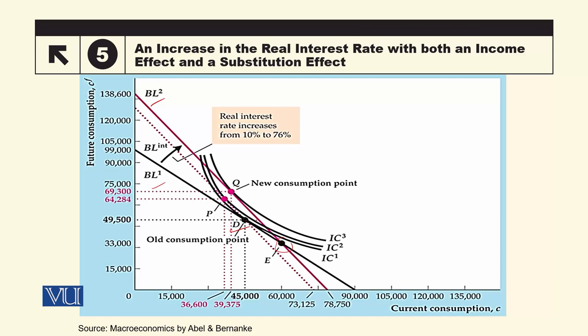D پر E کے ساتھ compare کریں — E پر اگر وہ ہوتا تو وہ no-lending no-borrowing position میں ہوتا۔ جب وہ D پر ہے تو current period میں جو available resources ہیں ان سے وہ کم خرچ کر رہا ہے، اس کا مطلب اس کے پاس کچھ saving available ہے جسے وہ bank میں deposit کرے گا اور اس پر interest earn کرے گا۔ So D پر ہونے کا مطلب the individual is a net lender۔